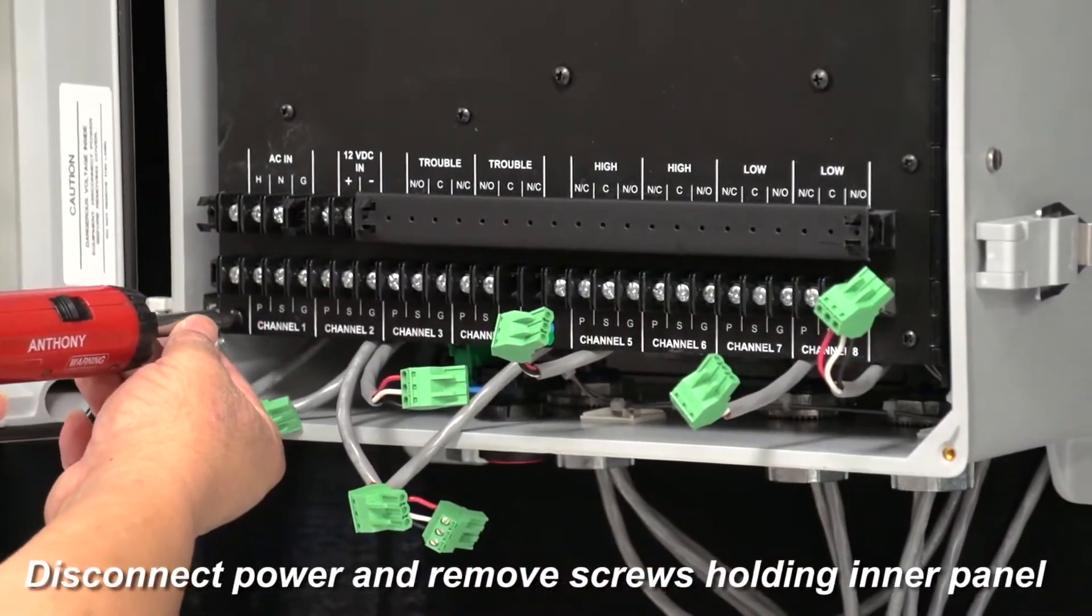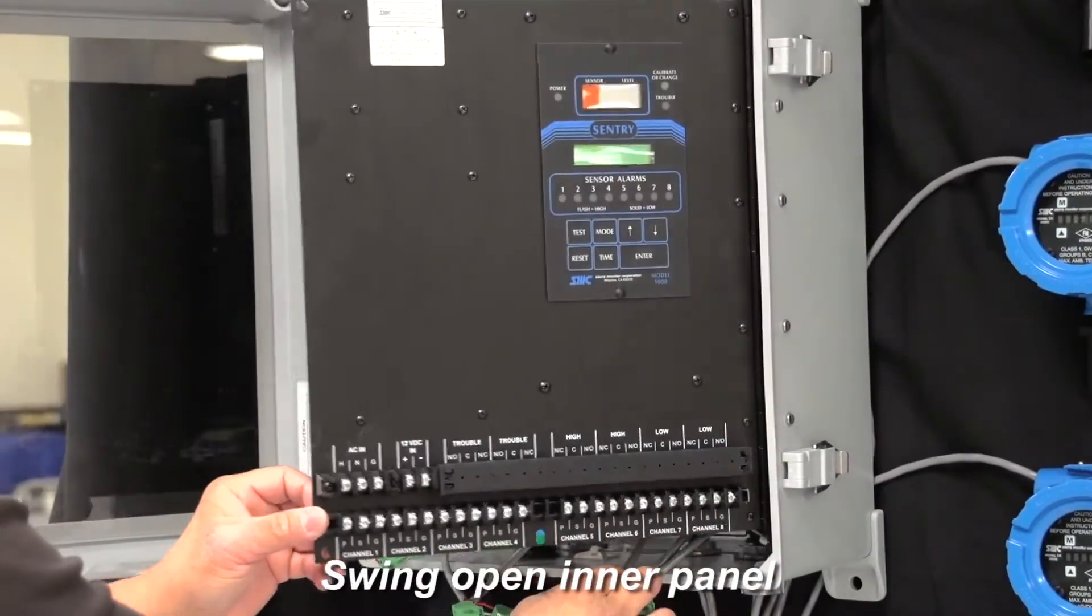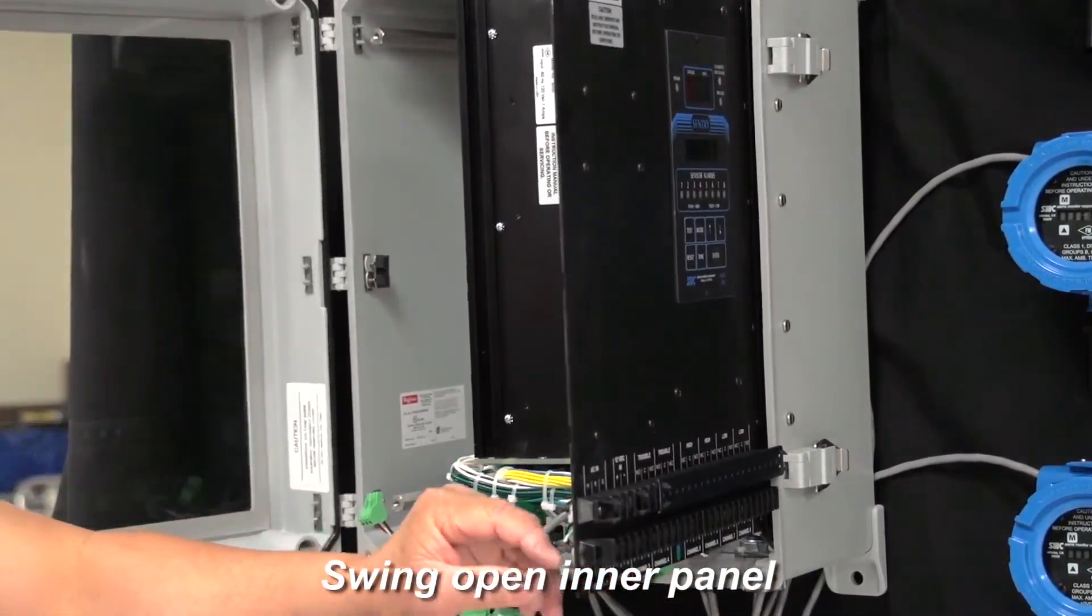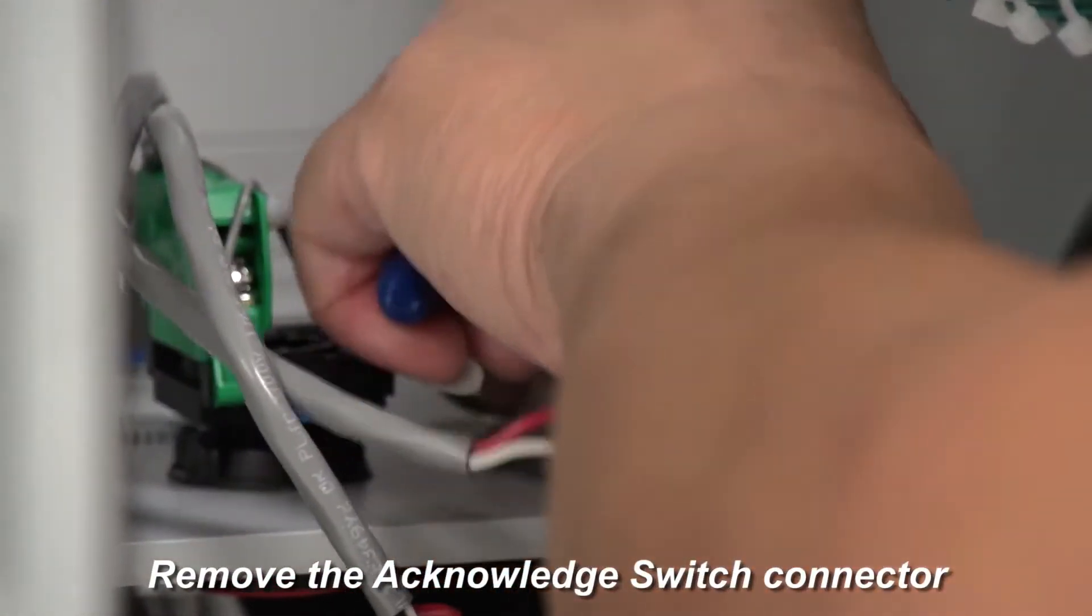Next, disconnect the power and remove the screws that are holding the inner panel and swing open the panel. Remove the connector for acknowledge switch and any wire tie-downs.